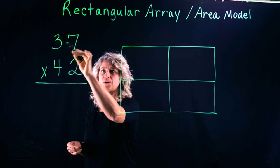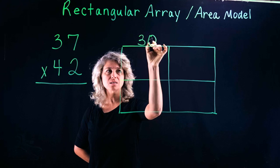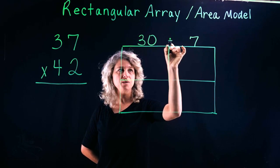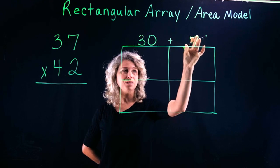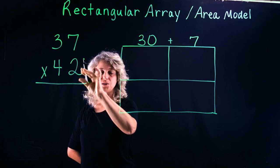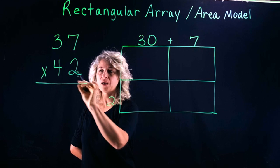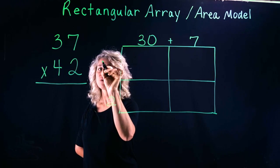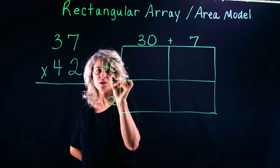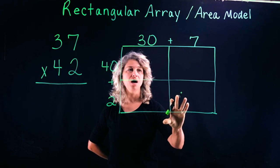So 37, we'll put 30 in this box and 7 will go here because we know that 30 plus 7 is 37. Now for 42, 2 will go here and 4 is not 4, it's worth 40 because it's in the tens place, and we know that 40 plus 2 is 42.